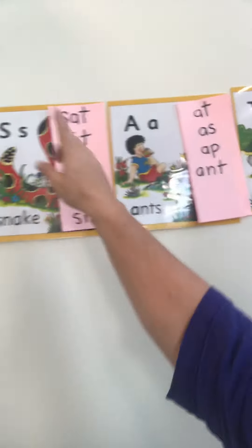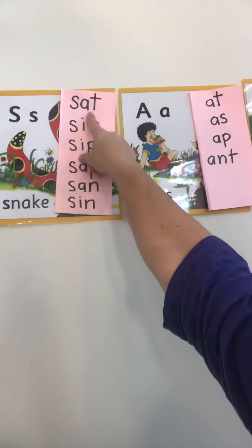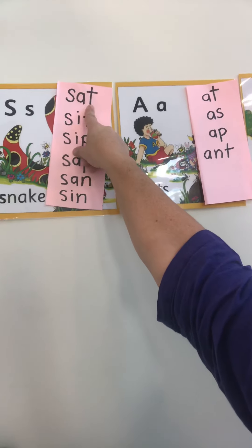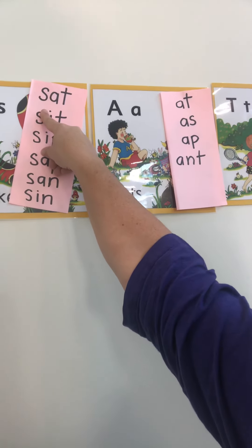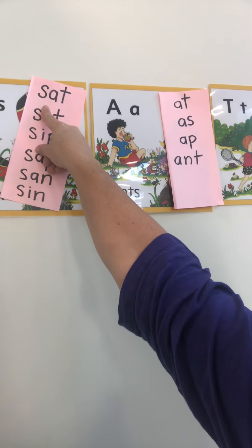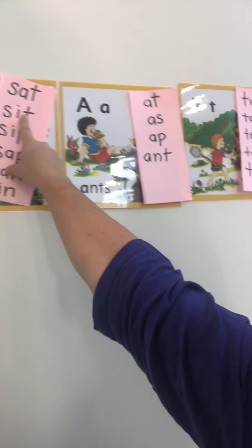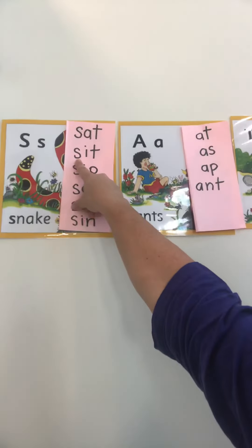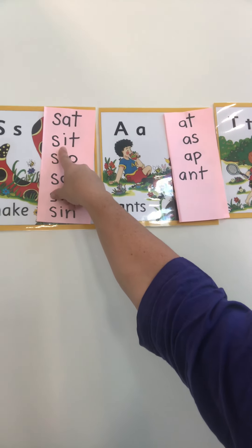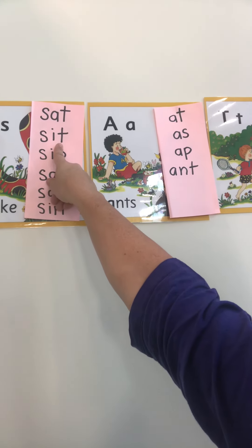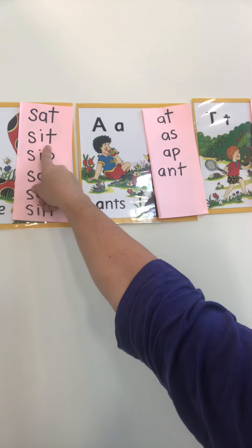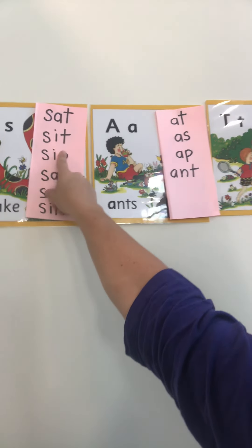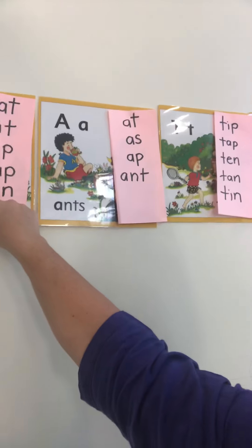All right, ready? Faisal, what does this say? Sat. Okay. Nayef, your turn. Okay. Abdullah, can you sound this out for me? Sit. All right, Hashem, your turn.